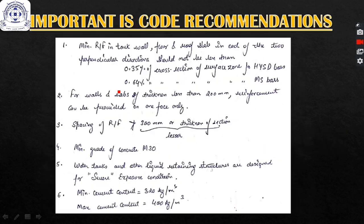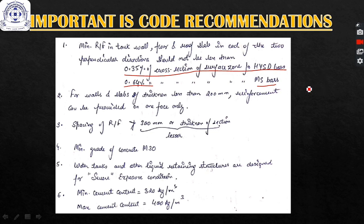Some important IS code recommendations for water tanks: the minimum reinforcement required is 0.35% of the cross-section of the surface zone for high yield strength deformed bars and 0.64% for mild steel bars. The surface zone normally means the thickness of the component, but in some cases half the thickness is considered.